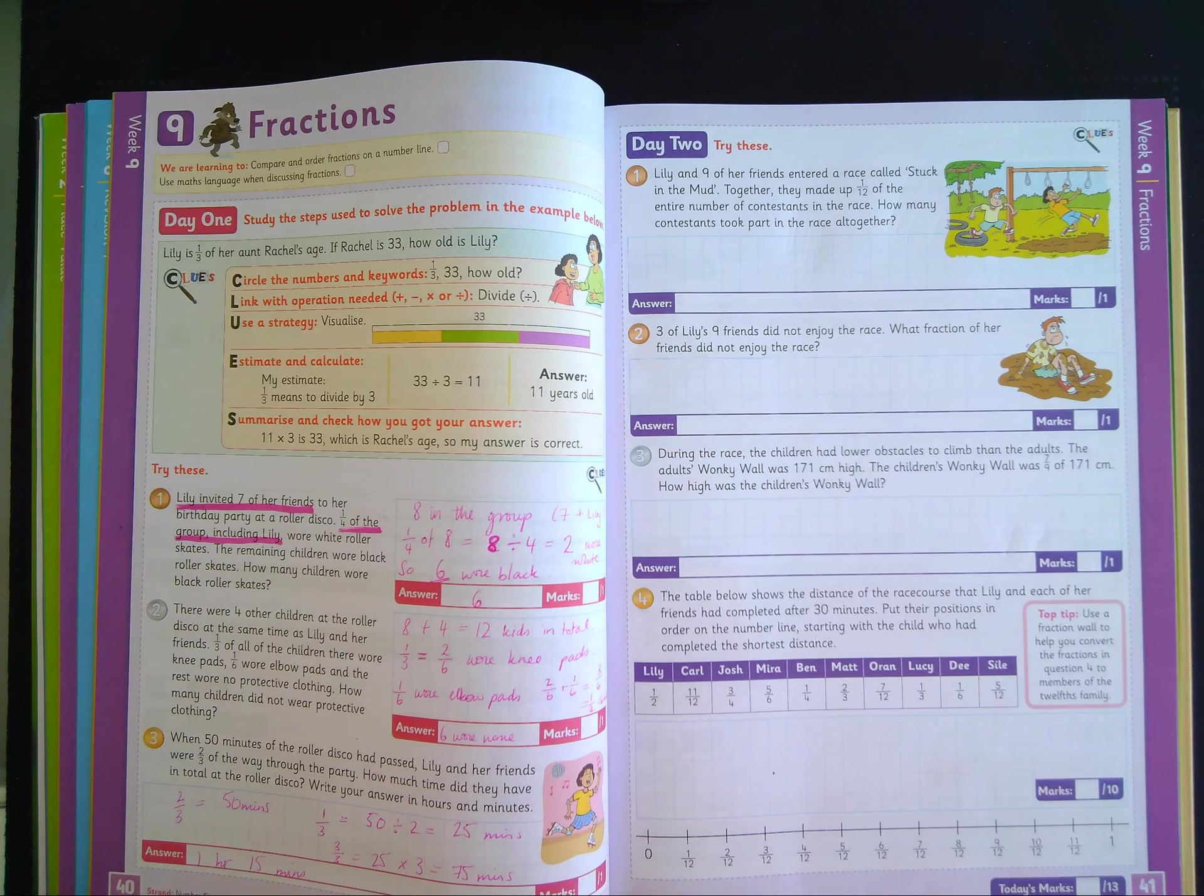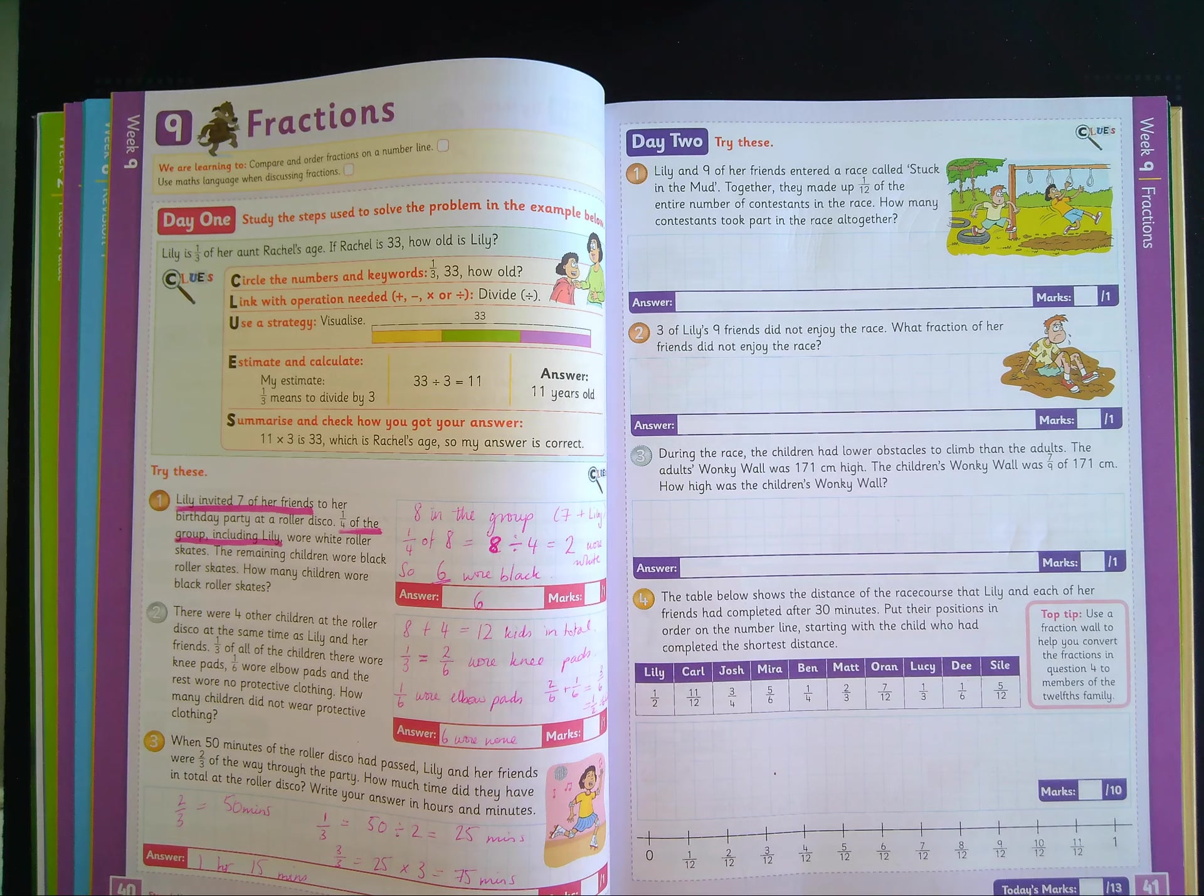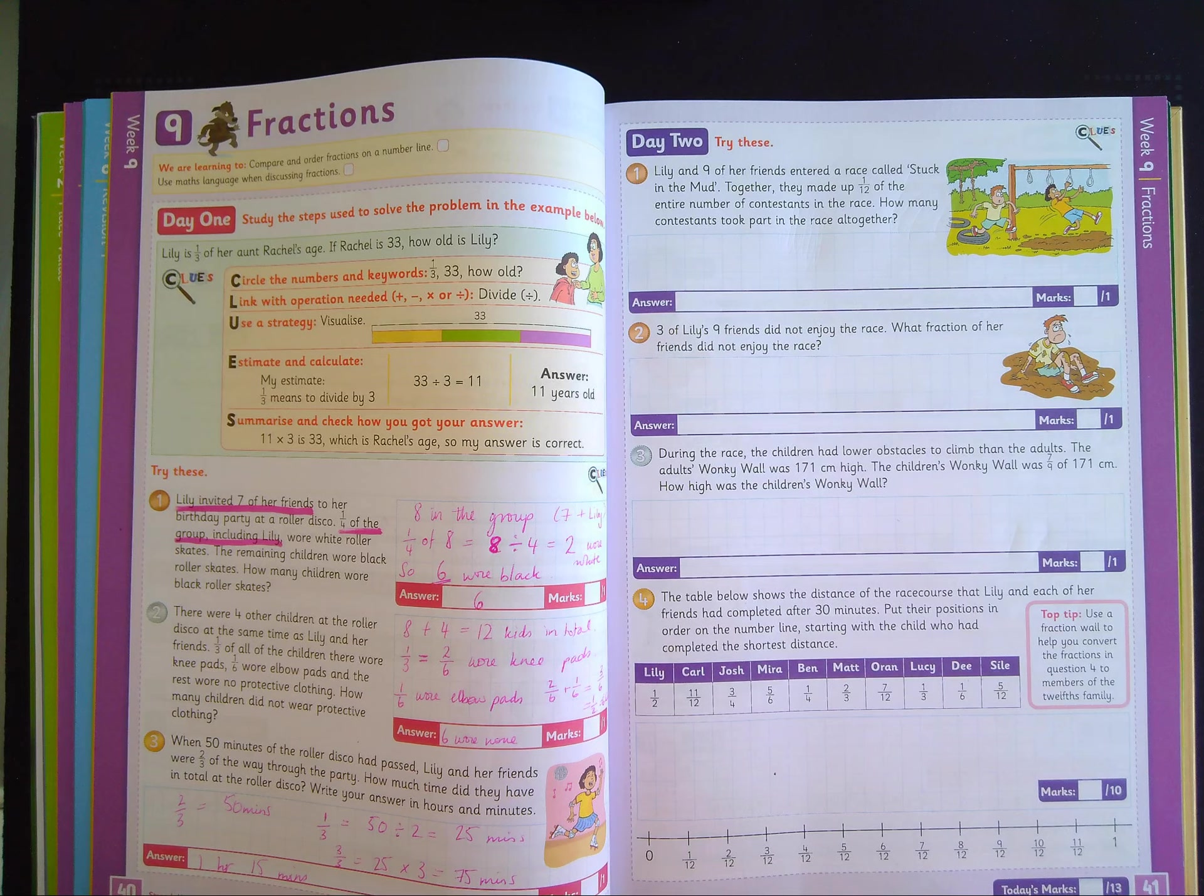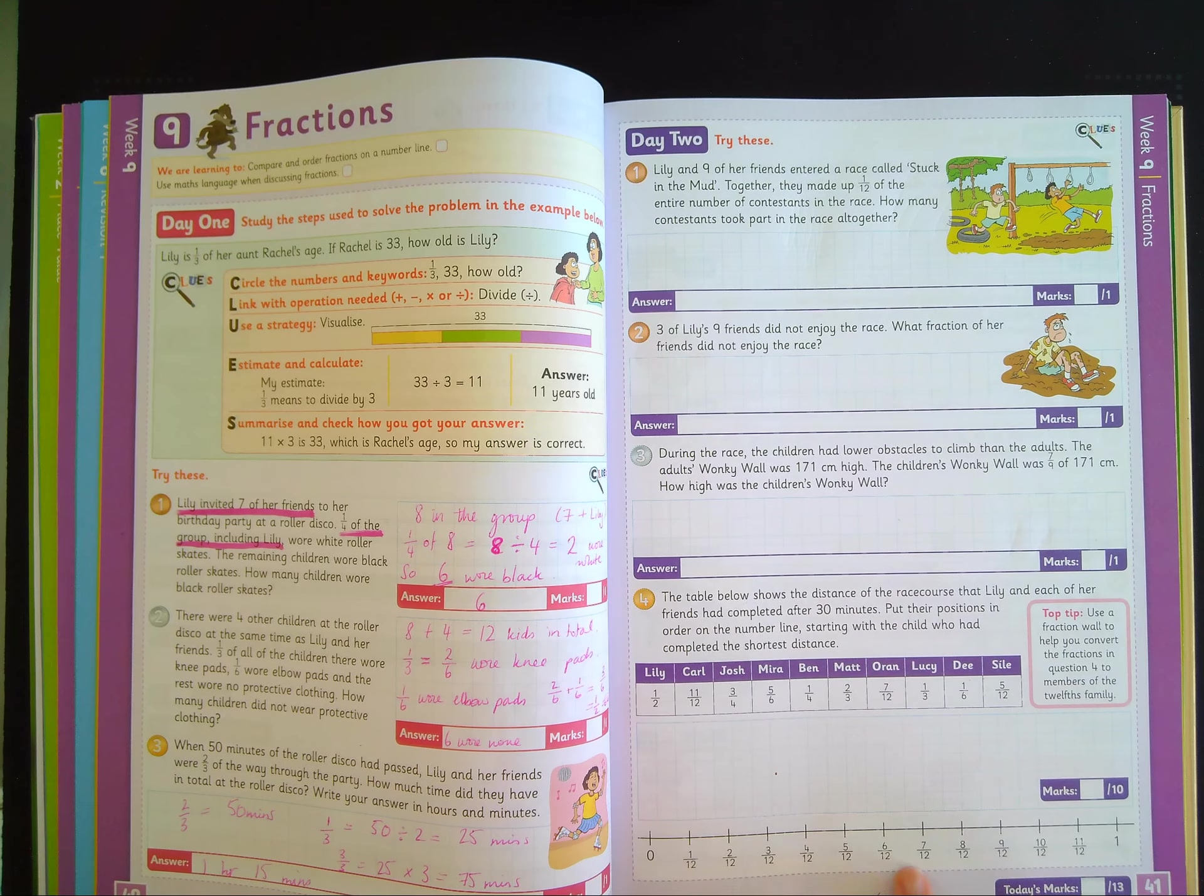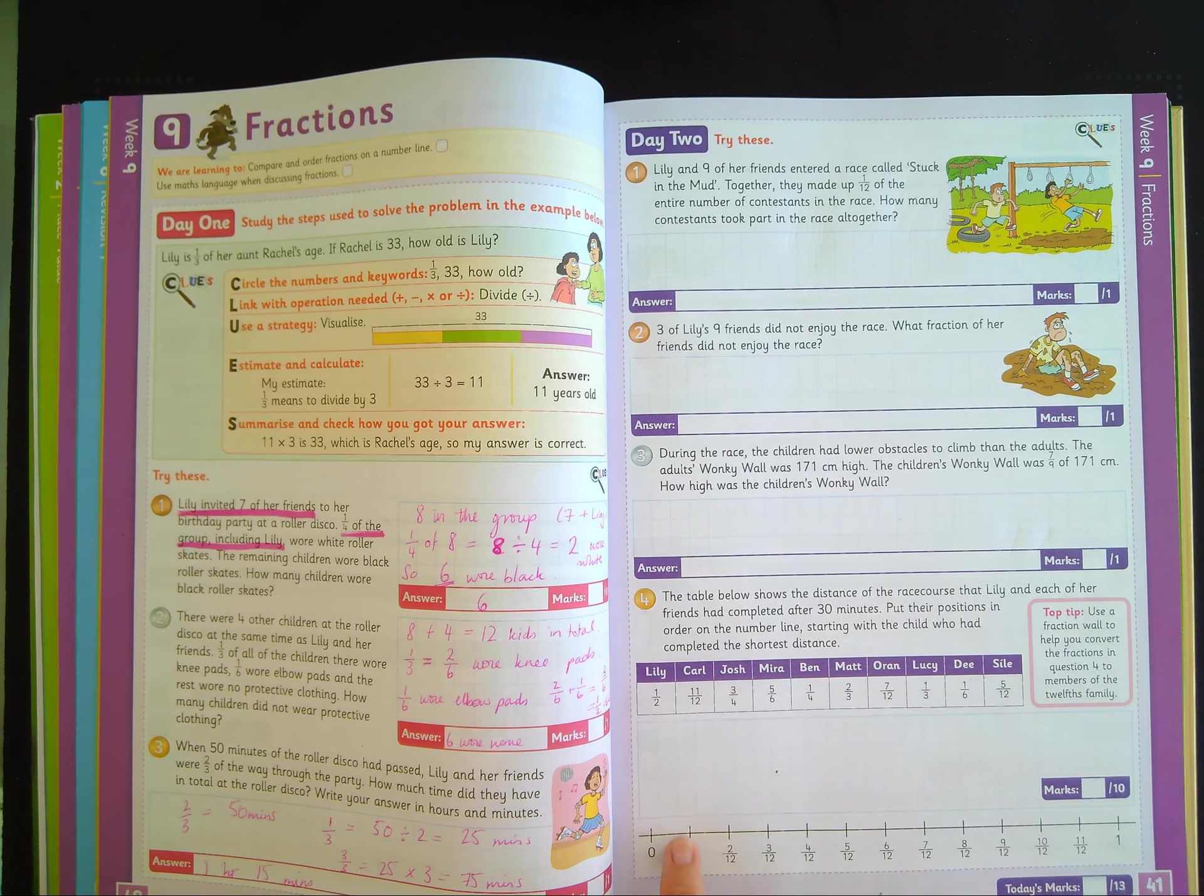And then, the last one. Look at the table below. So this table here shows the distance of the race course that Lily and each of her friends have completed after 30 minutes. I'd say they're very tired. Put their positions in order on the number line, starting with the child who had completed the shortest distance. Now, down here, the number line is divided into twelfths. So basically, whoever's the furthest ahead will be closest to one. And here it would be the person who is the shortest distance.